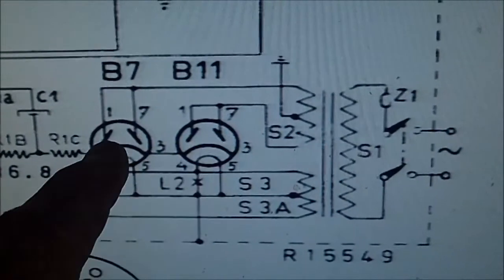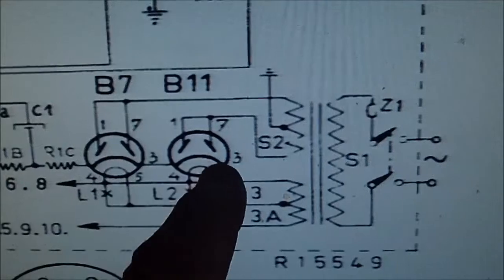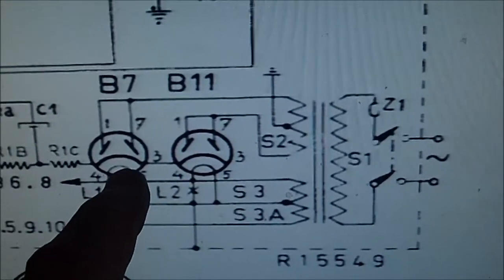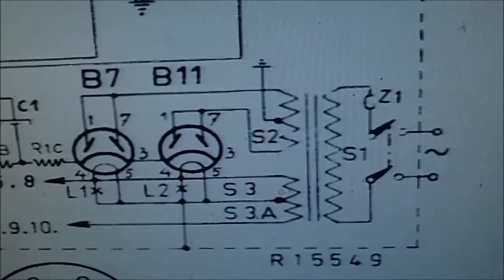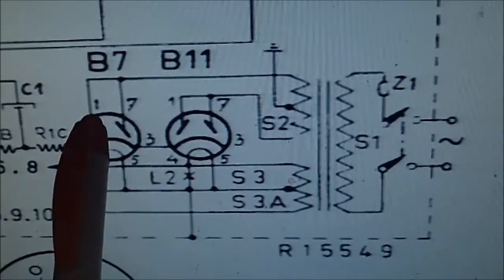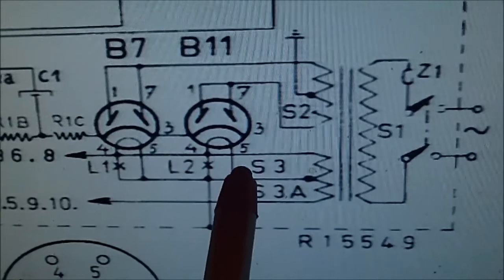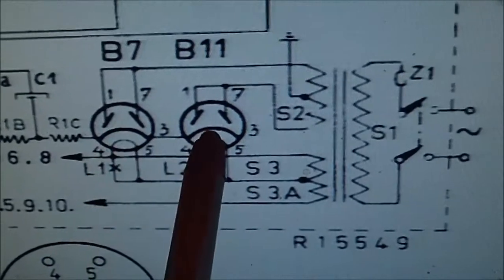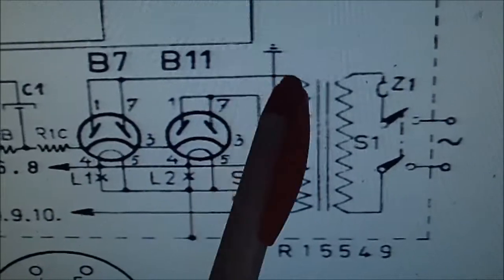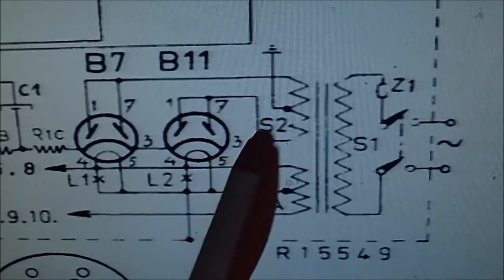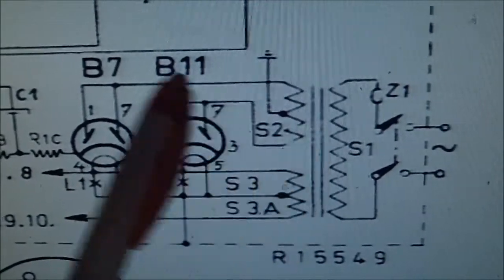The EZ84s, I have to look them up - the rectifier tubes, pins one and seven on each of these are tied together. So they're actually one tube is rectifying half the wave and the other is rectifying the other half.